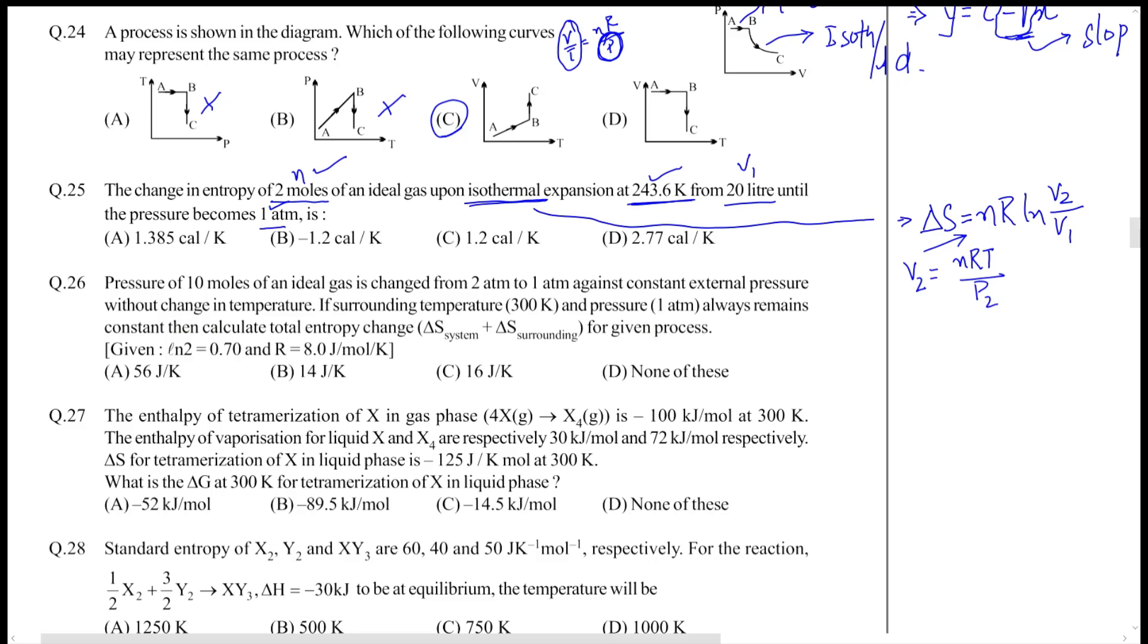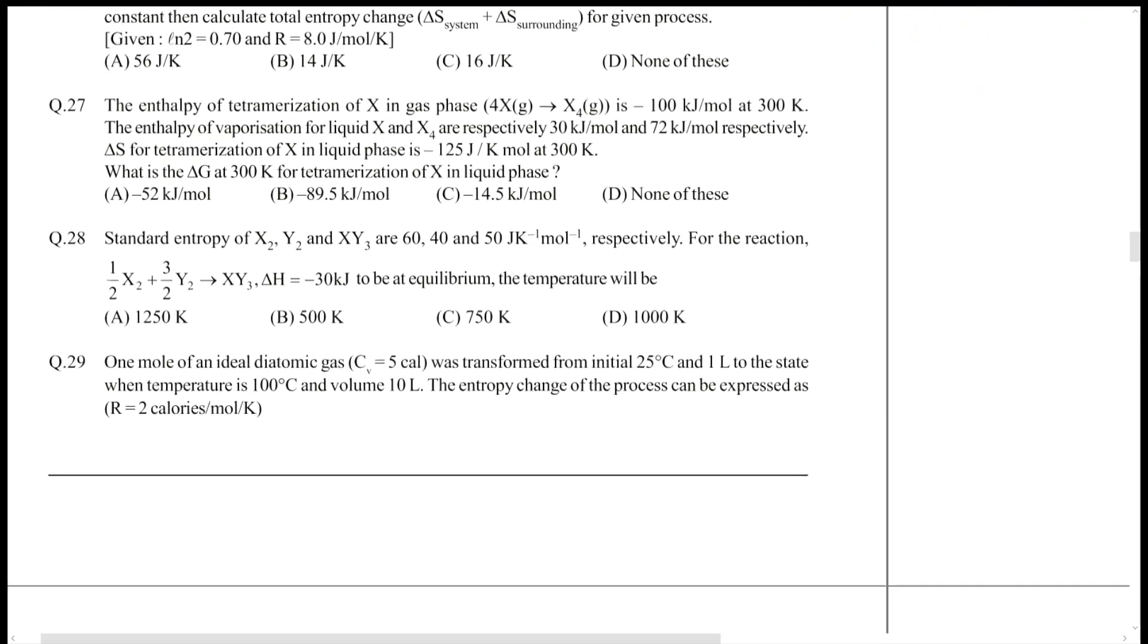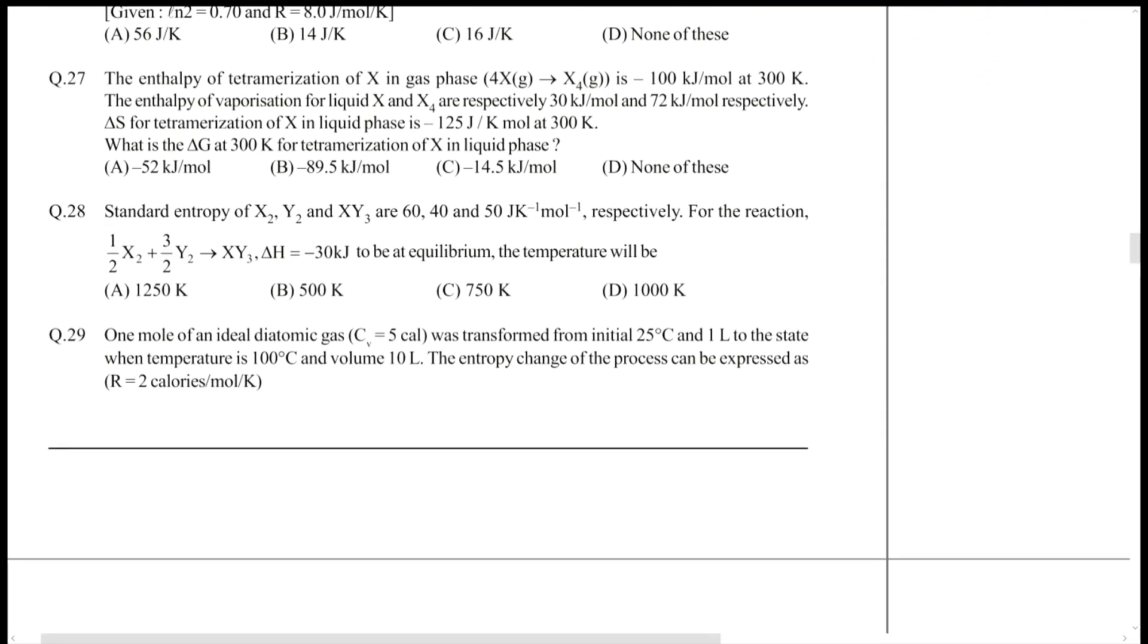Question 28: standard entropy of X2, Y2, and X3Y3 is given. You want equilibrium. When you want equilibrium, delta G has to be zero. While at equilibrium, delta G equals delta H minus T delta S. This is what has to be taken into account. Now delta H is already known.